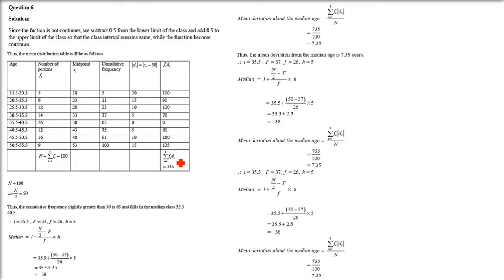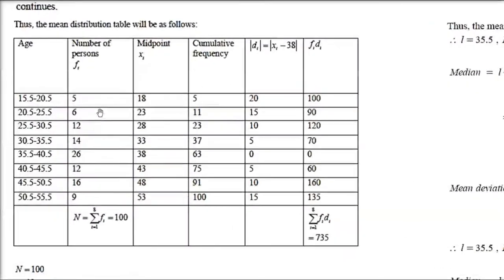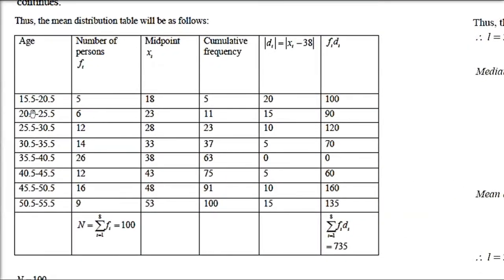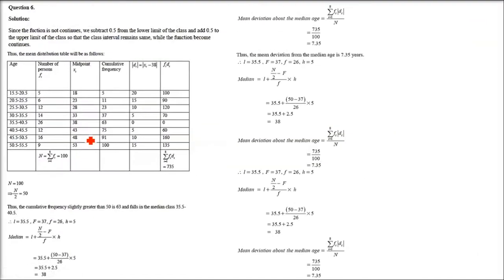Question 6 asks to calculate the mean deviation about median age for a distribution of 100 persons. There is a catch here — this is not a continuous frequency distribution.